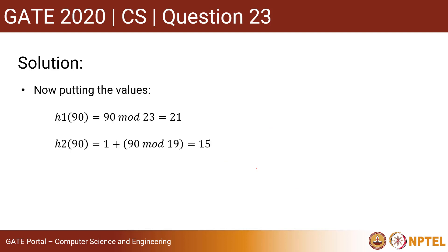Let's calculate. Now let's put values in the h1 hash function. h1(k) where k = 90. By putting the value, we get 90 mod 23 = 21.